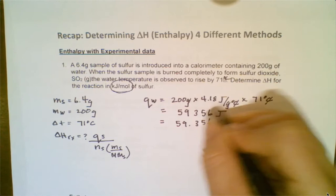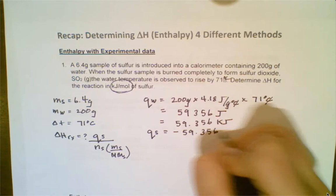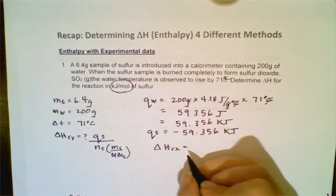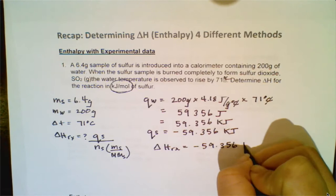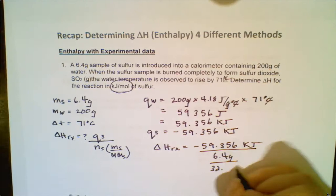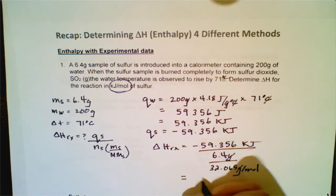That means in the combustion of the sulfur, that is the number of kilojoules — I just flipped the sign — that would have been released. Q lost equals Q gained. Now I want to calculate delta H of the reaction by substituting in Q of the sulfur, which is negative 59.356 kilojoules. I take the mass of sulfur, which was 6.4 grams, and divide it by the molar mass of sulfur, which is 32.065 grams per mole. The grams cancel out, leaving kilojoules per mole.